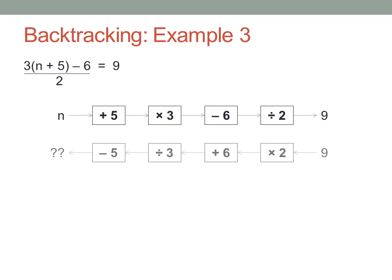Now backtrack the rule. The output value is nine. Nine times two is eighteen. Eighteen plus six is twenty-four. Twenty-four divided by three is eight, and eight minus five is three. N must be three for that whole expression to evaluate to nine.